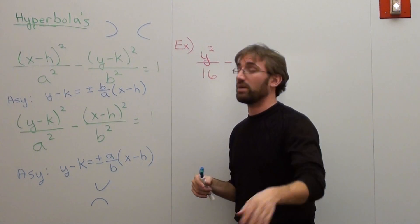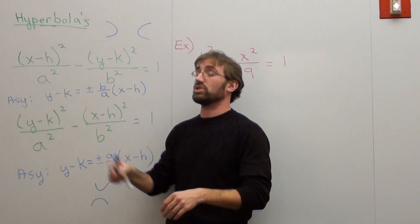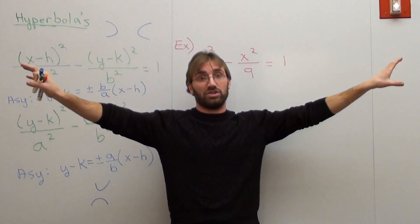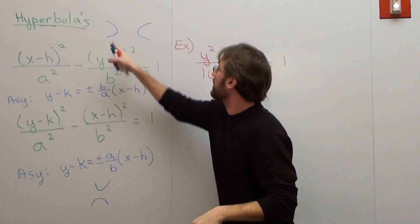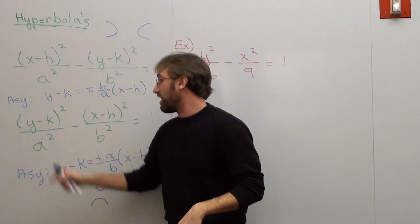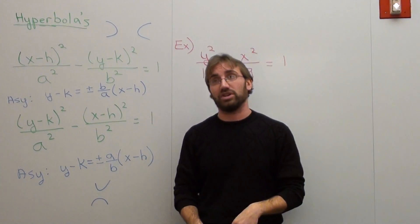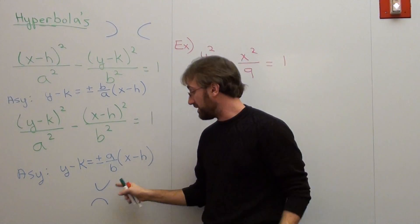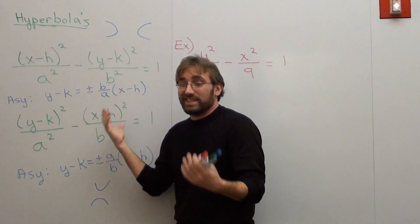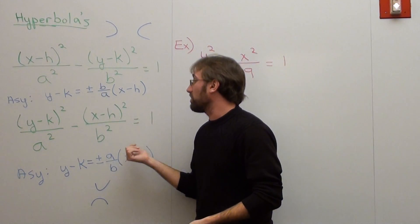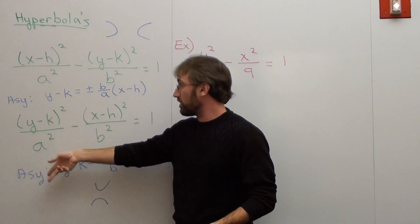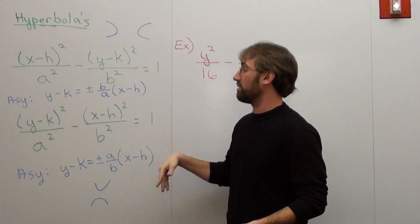The main difference is: if the x value goes first on a hyperbolic graph, then you have two parabolas that open to the left and to the right in opposite directions. If your y value goes first, then you have two parabolic functions that open in opposite directions going up and down. It's basically the same equation — both equal 1. X and h go together, y and k go together, a goes with the first term, b goes with the second term.